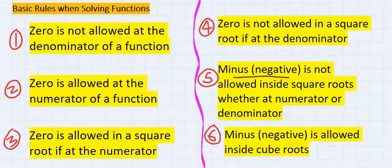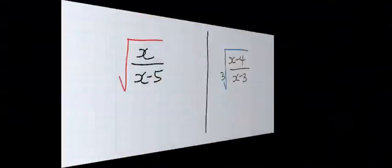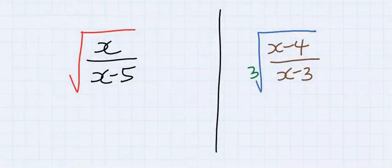Negative is not allowed inside the square root whether it is at the numerator or at the denominator. However, inside the cube root, negative is allowed.